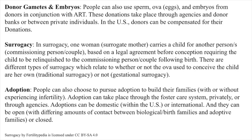Donor gametes and embryos: people can also use sperm, ova (eggs), and embryos from donors in conjunction with assisted reproductive technology. These donations take place through agencies and donor banks or between private individuals. In the U.S., donors can be compensated for their donations.